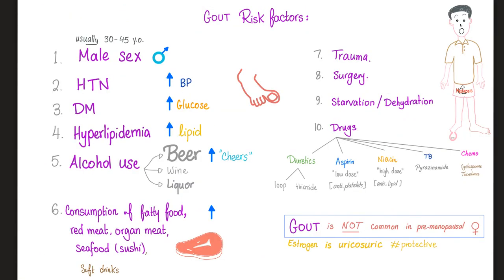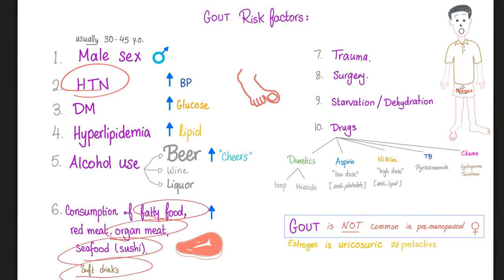Risk factors of gout include hypertension, meat, fat, seafood, soft drinks, fructose, glucose, and so on. Uric acid elevation is less common in women because estrogen is protective — it is uricosuric, meaning it promotes excretion of uric acid in the kidney.